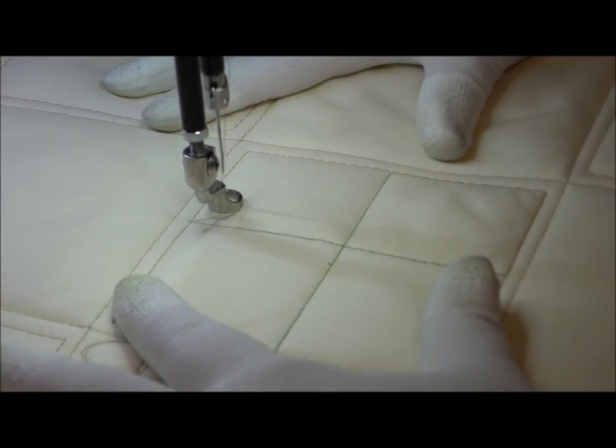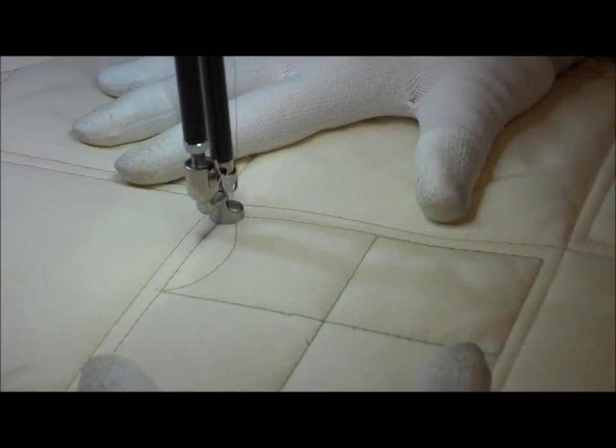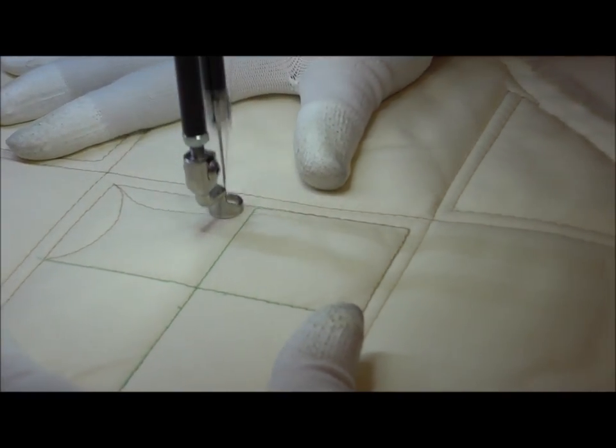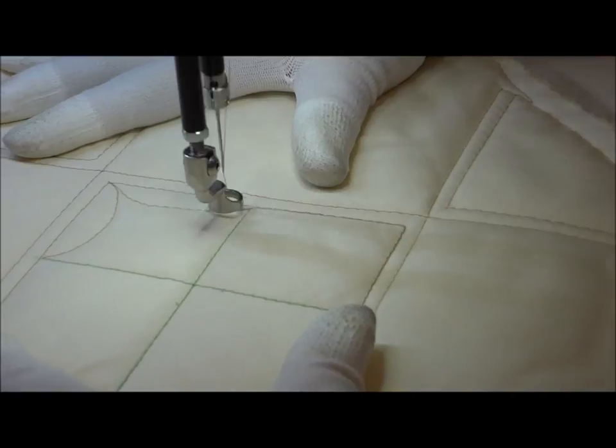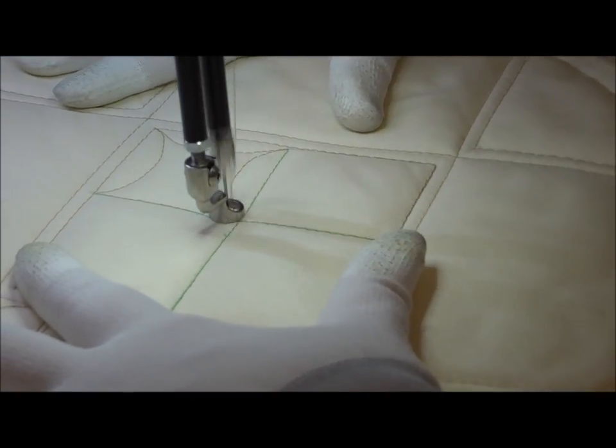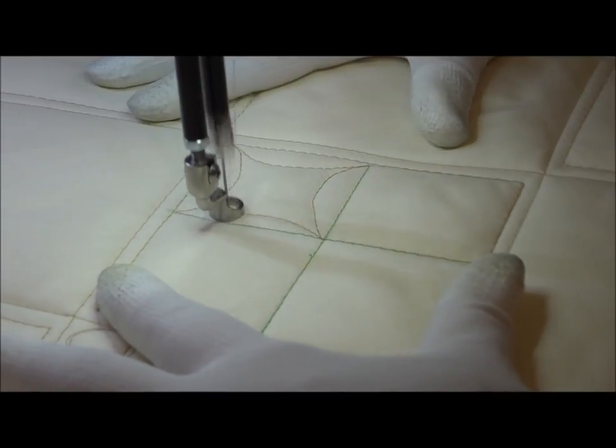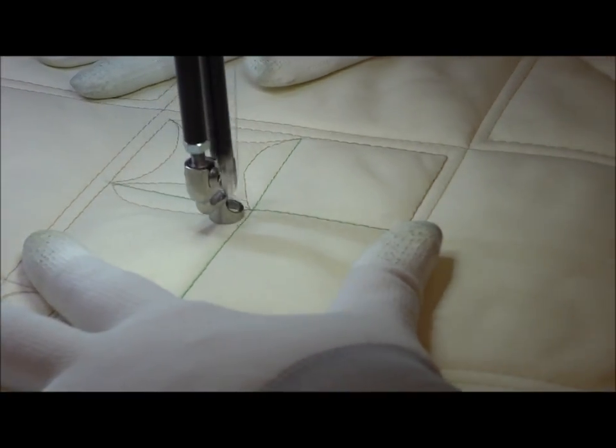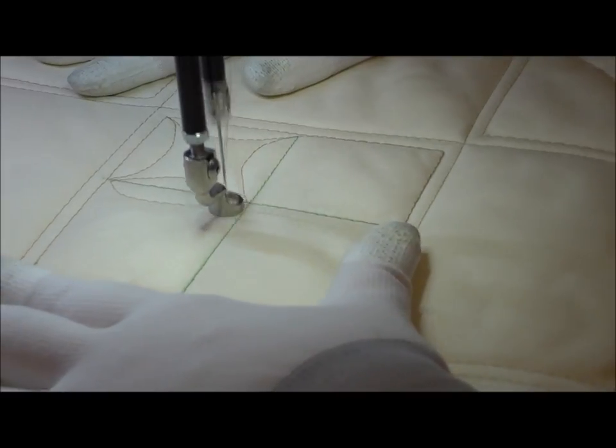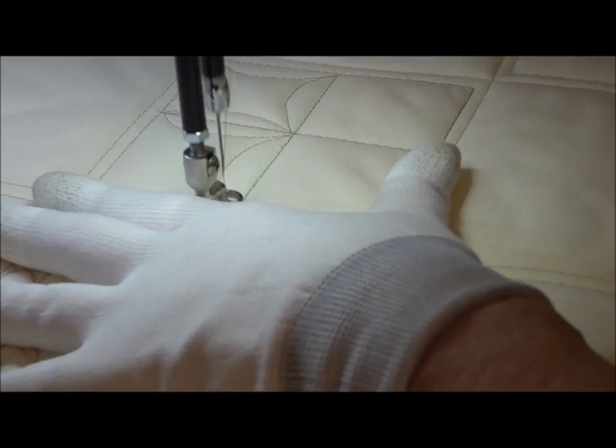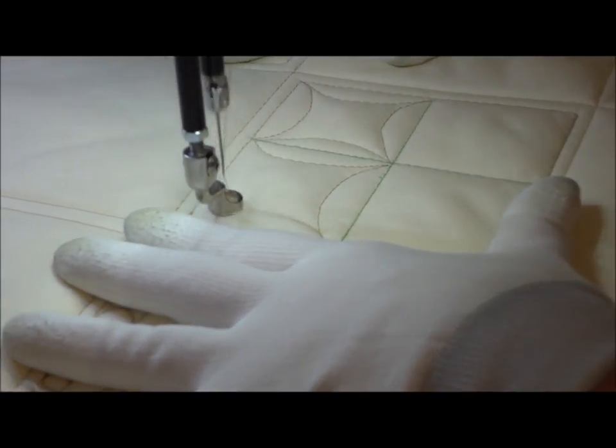At this point, I'm going to begin to stitch cathedral windows and it's just a sort of an oval, half an oval on each side. And if you just track it around like this, you won't have to, again, you won't have to break thread. It's a very easy stitch to do on the machine. Just take your time and enjoy.